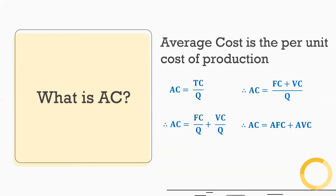So we have this formula which says that average cost is equal to average fixed cost plus average variable cost.